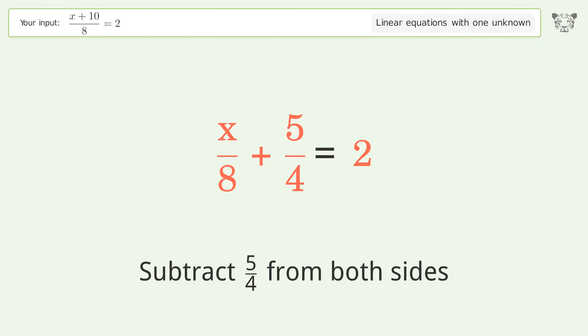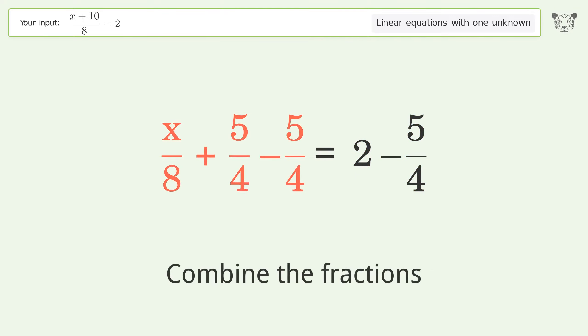Group all constants on the right side of the equation. Subtract 5 over 4 from both sides.